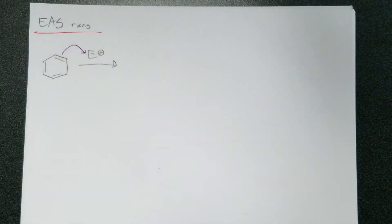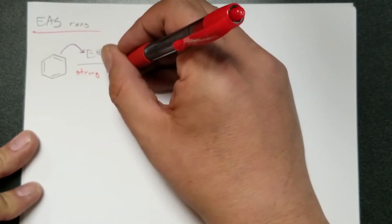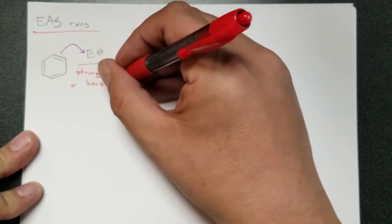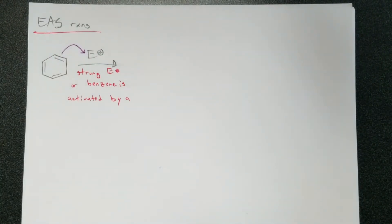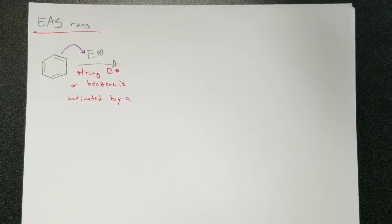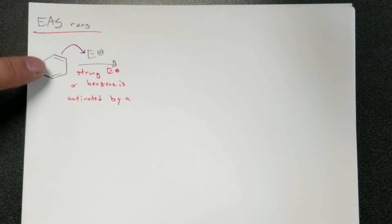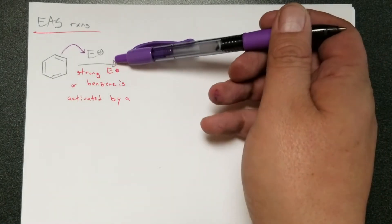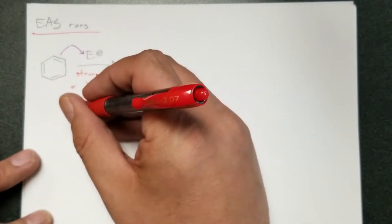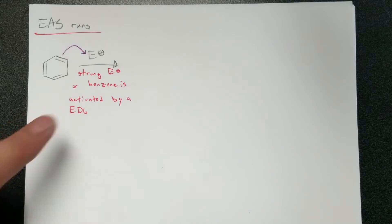So first things first, this will attack. And what will happen here is in order for this reaction to even work, there must be a strong electrophile or the ring is activated. So we need a strong electrophile or benzene is activated by a... So what I mean by activated is that it's become more reactive. So what do you guys think? Based off the arrow push here, which type of group would make it more reactive? Would it be a donating group or a withdrawing group, do you think? Donating group. Yep. A donating group makes this thing more reactive as a nucleophile. So in order for this to react in this kind of reaction, you must have a very strong electrophile or the benzene is activated by an EDG.